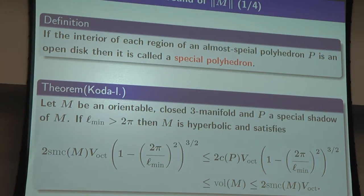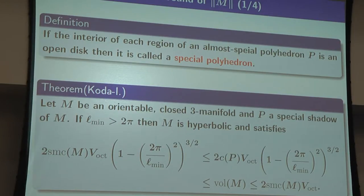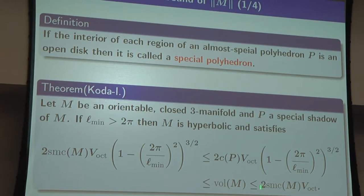For a lower bound, we use some known inequalities. If the interior of each region of P is an open disk, it is called a special polyhedron. If M is an orientable closed 3-manifold and P is a special shadow of M, and if a certain length condition — L_min — is more than 2π, then M is hyperbolic and satisfies two-sided inequalities bounding the hyperbolic volume in terms of SMC. If L_min is very large, the correction term becomes almost 0 and there is essentially no difference between the upper and lower bounds.